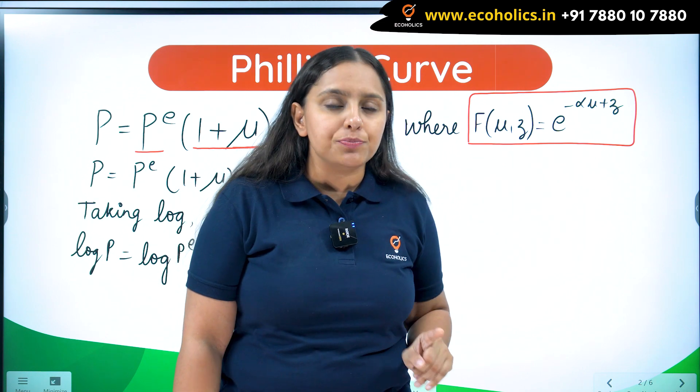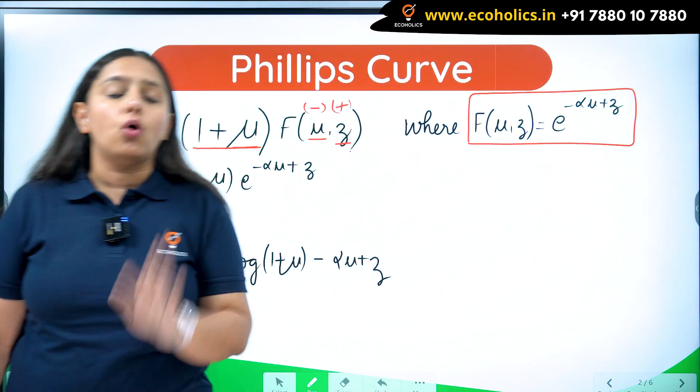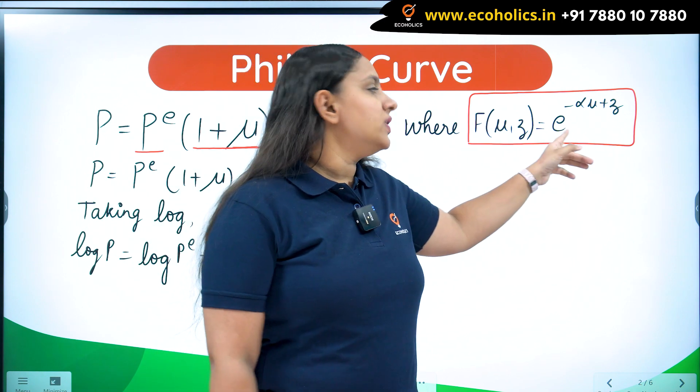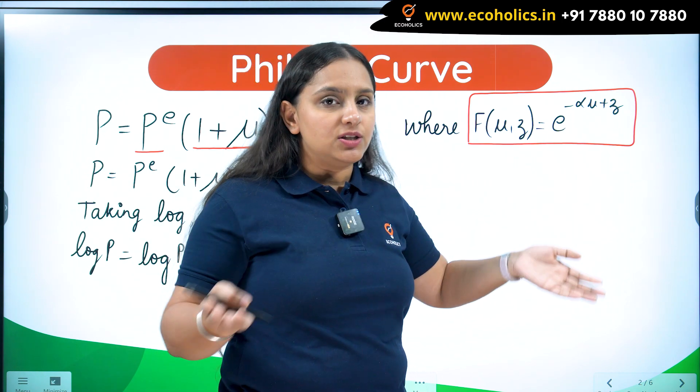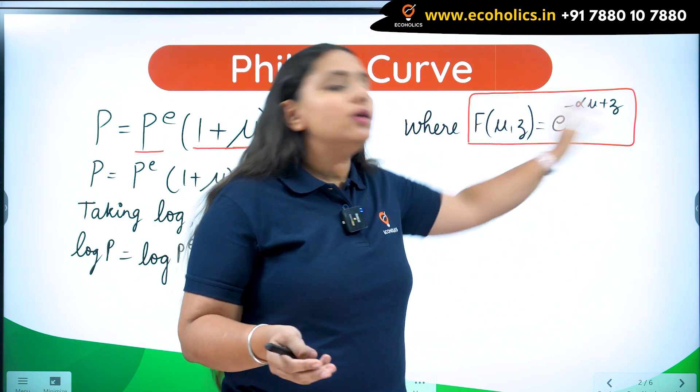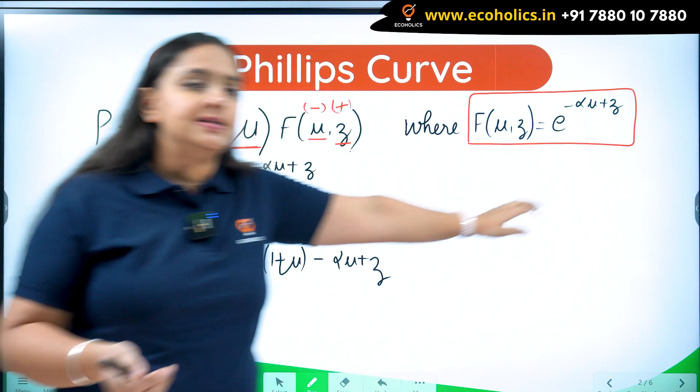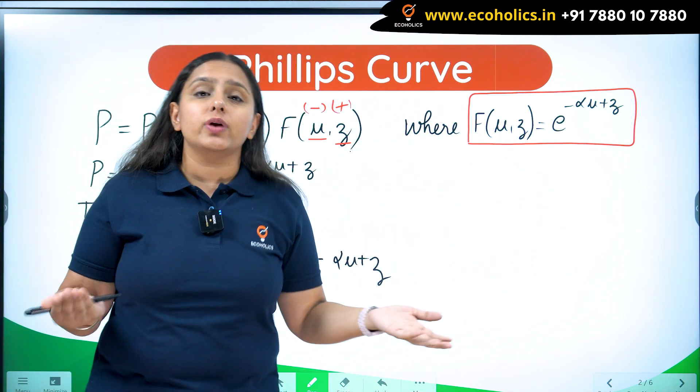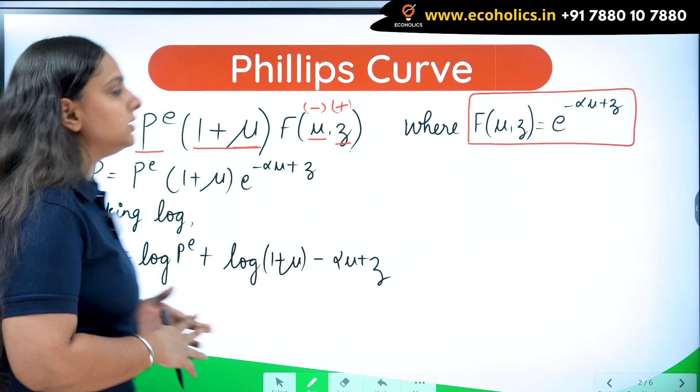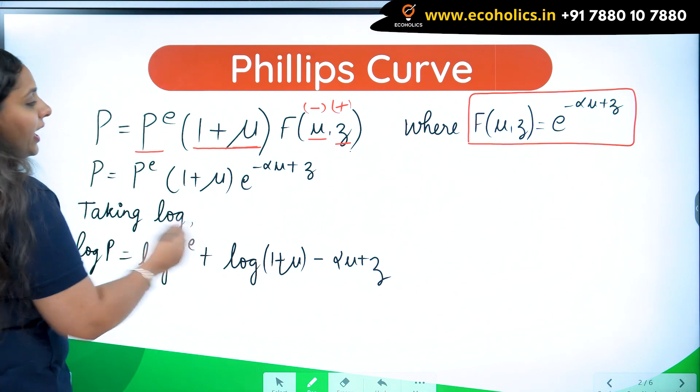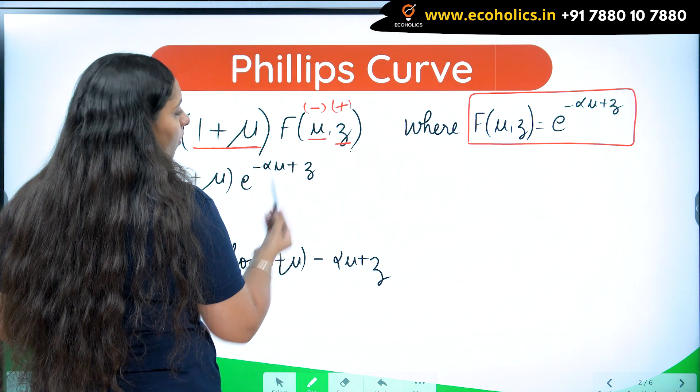There is a reason why I have taken it in exponential form. The reason is when I will be taking logs to solve this equation further, log of E is going to cancel each other out. Taking log of such functional form is easy and you can get to your desired result in an easier way.